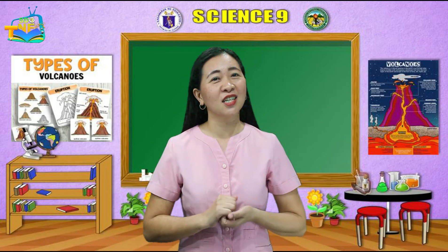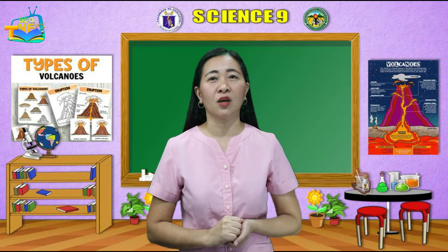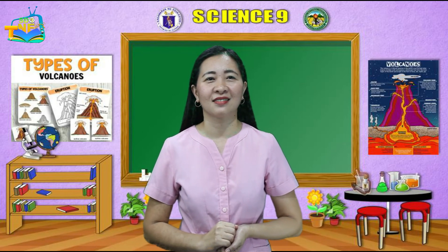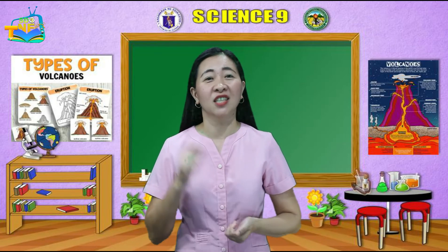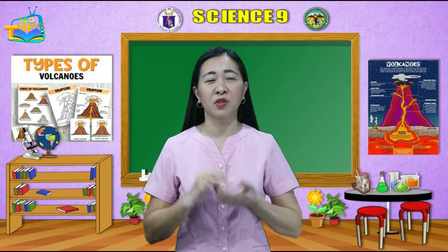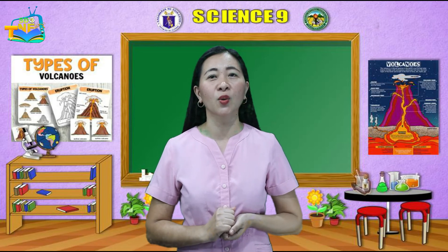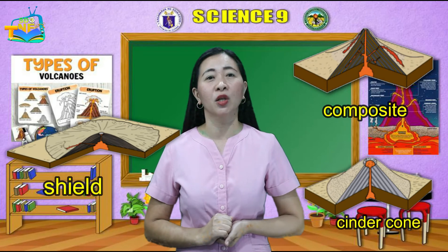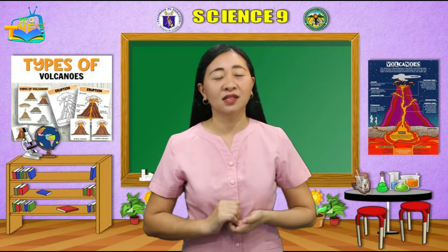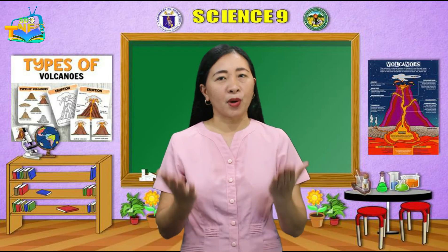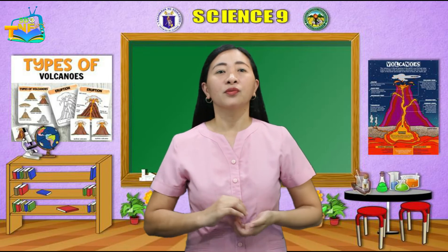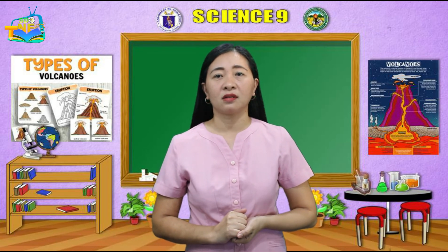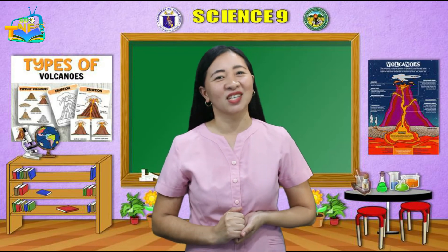Now let us see if you remember the 3 types of volcanoes. The 3 types of volcanoes according to the shape of the volcanic cone are shield, cinder, and composite or stratovolcano. Let us test your mastery of the lesson. Prepare your pen and paper, read the questions to be flashed on the screen, and write the letter of your answer. You have 5 seconds to answer each.